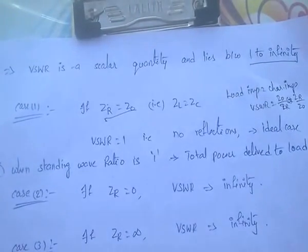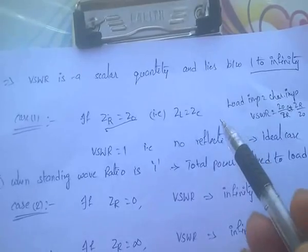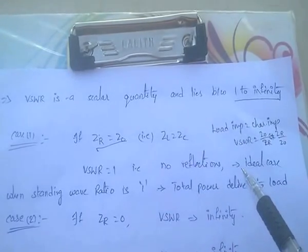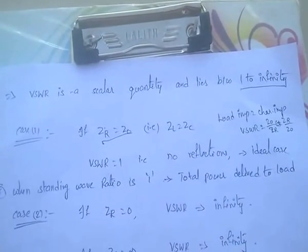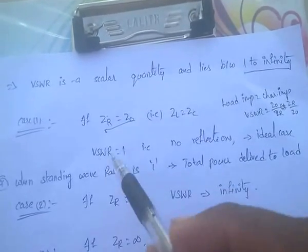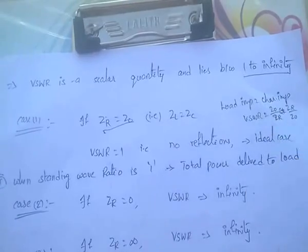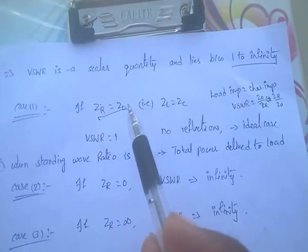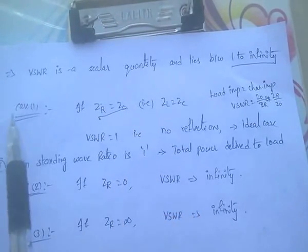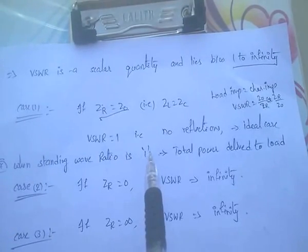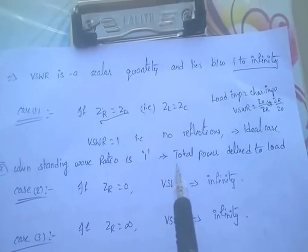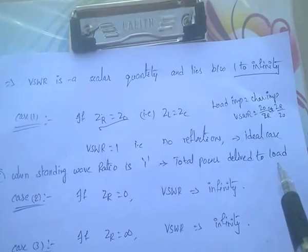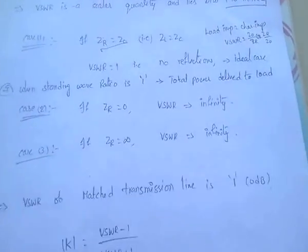If the VSWR, that is voltage standing wave ratio, is 1, there is no reflection in the waveform. No reflection means it is an ideal case — no reflection means no loss. If VSWR equals 1, the total power is delivered to the load. Load impedance equal to characteristic impedance gives VSWR of 1, meaning total power is delivered to the load.